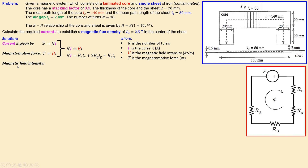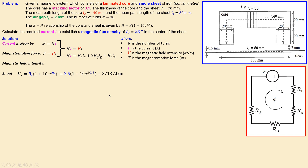For the sheet, the magnetic flux density is already given as 2.5 tesla in the problem. We substitute that into the B-H formula to get the associated magnetic field intensity, which gives H_sheet = 3713 ampere-turns per meter. We already have the mean path length of the sheet: 0.08 meters.